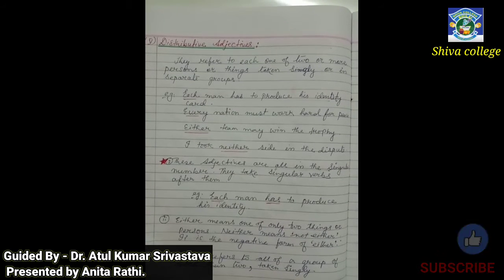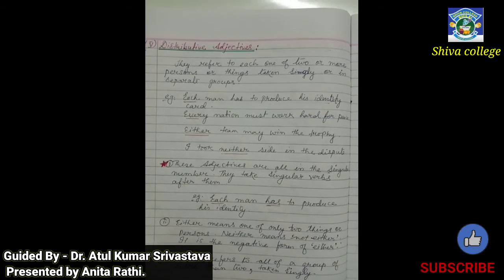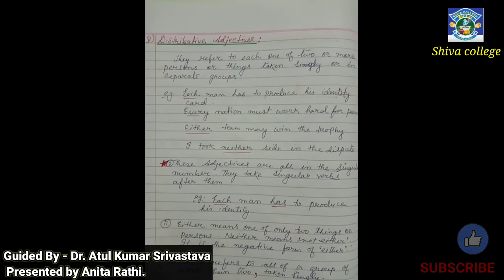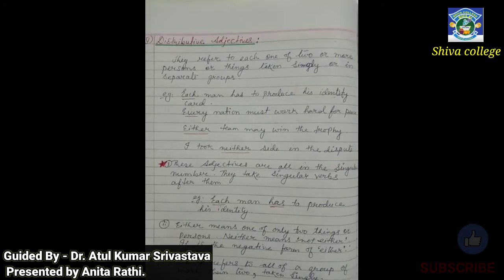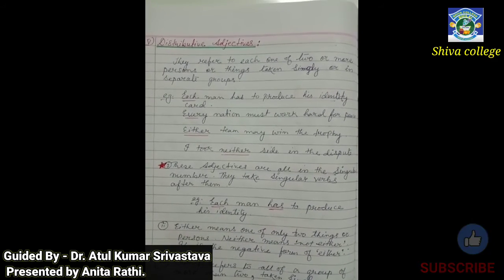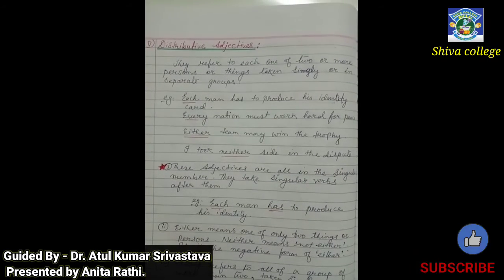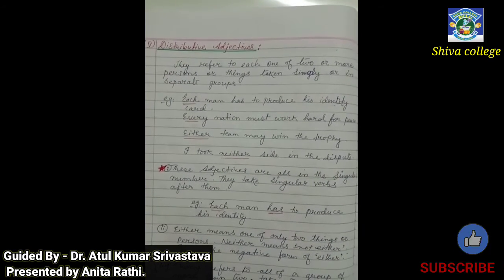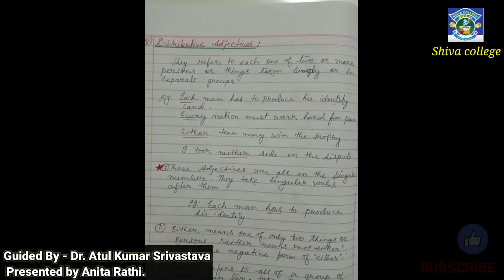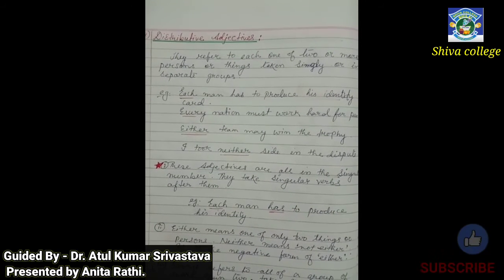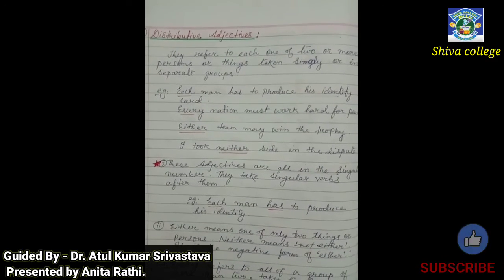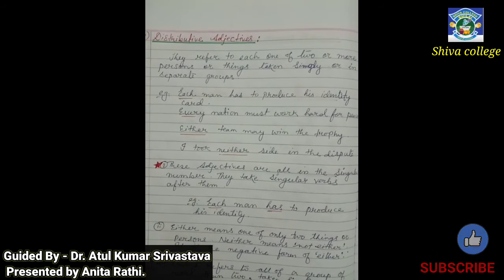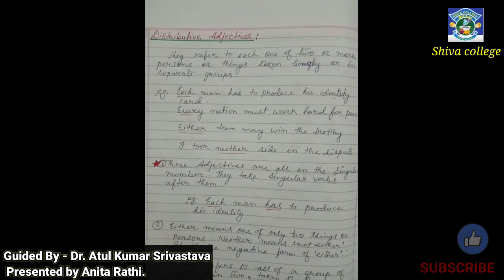Distributive adjectives refer to each one of two or more persons or things taken singly or in separate groups. For example: 'Each man has to produce his identity' — each man means every single person in a group is being talked about.